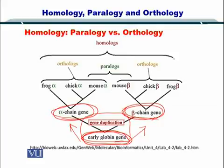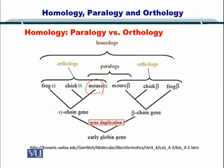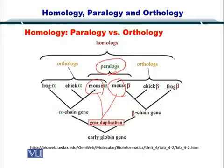This beta chain gene can be found in frog, in chick, and in mouse. Similarly, the alpha chain gene can be found in mouse, chick, and frog as well. Now, if you look carefully, the same alpha and beta gene has been found in mouse — the same species has both the alpha and beta gene. So when both of these genes are translated into proteins, two proteins will exist which are essentially coming from the same ancestral gene. This is called two paralogues: two genes present in the same species but different, derived from the same ancestor.